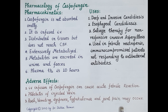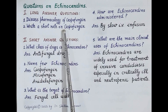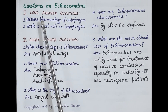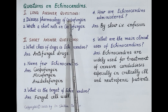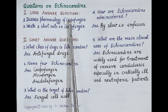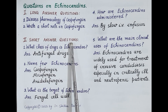Now let's summarize echinocandins by answering a few questions that can be asked in university exams. There are two types: long answer questions, normally asked for 5 to 10 marks, and short answer questions, usually asked for 1 to 2 marks.